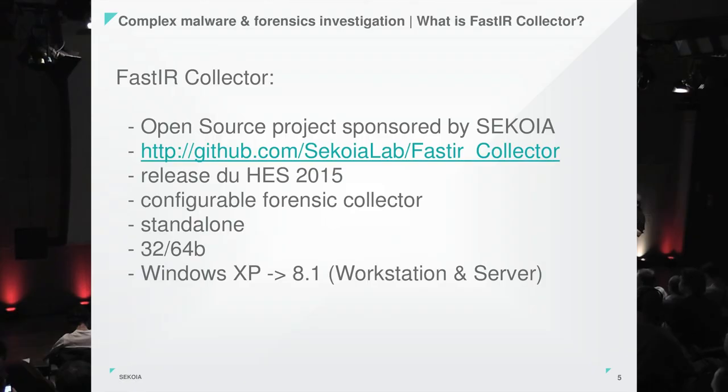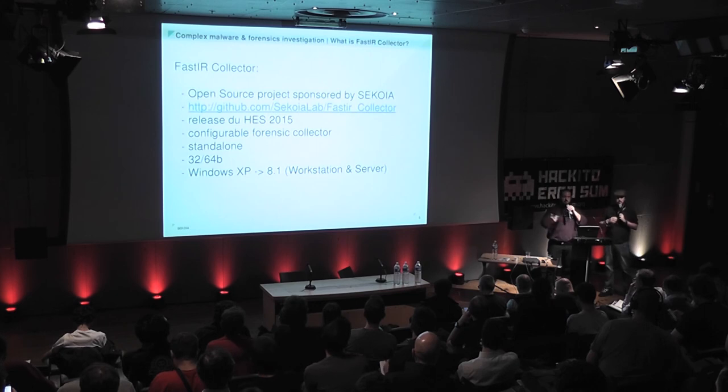Just executing standalone. The second constraint is configurability, because when you do incident response, you don't know how the threat compromised the computer — which registry keys were modified, which files were dropped, or if there's DLL hijacking. The goal is to make the software very modular and configurable. We support Windows XP through 8.1. Today we release the source code in a new repository for Fast IR Collector. For the moment the repository is private and we will switch it to public after this talk.